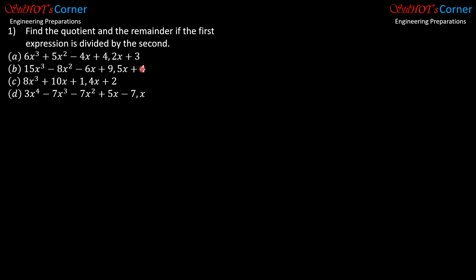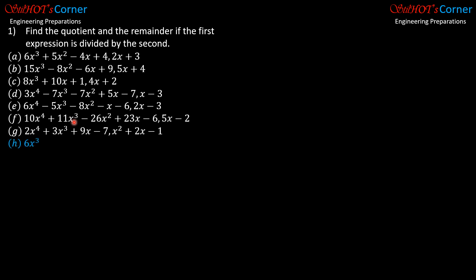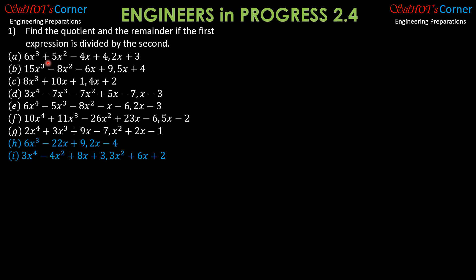So find the quotient and the remainder if the first expression is divided by the second. I prepared 7 problems for my part and 2 for your part. This is just like long division of numbers — the first term of the dividend divided by the first term of the divisor. So we copy the expression in descending order of the exponents of the variable, then divide by 2x plus 3. The first term of the divisor, which is 6x cubed, divided by 2x, gives 3x squared.